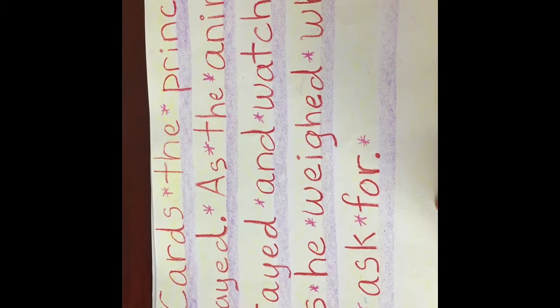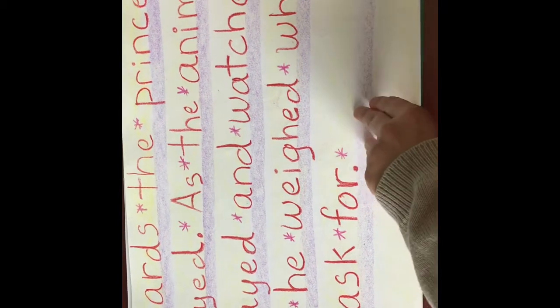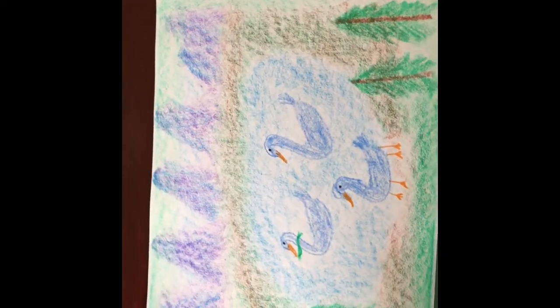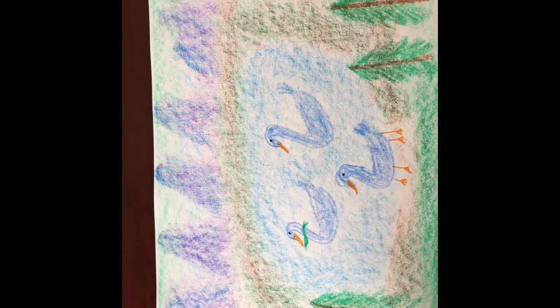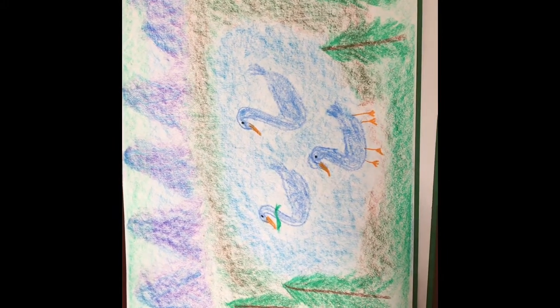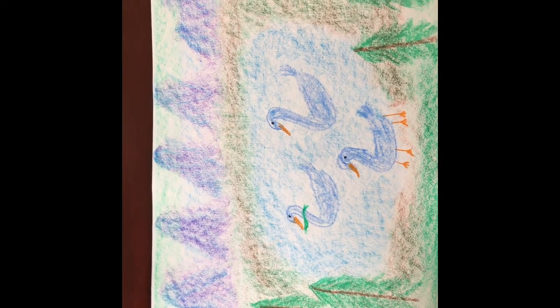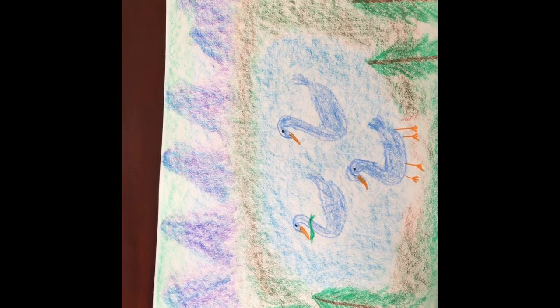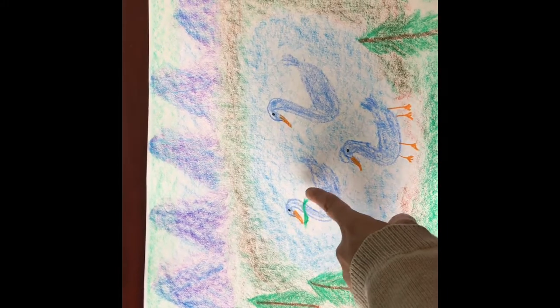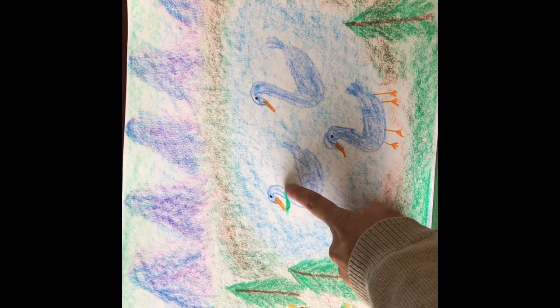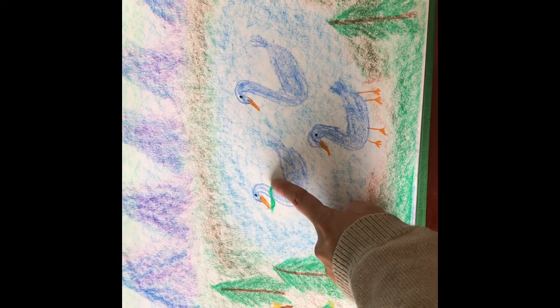And today we're going to start on this drawing. What scene is this? This is where the King of Ireland's son is looking for Fidelma when she is wearing her swan skin.